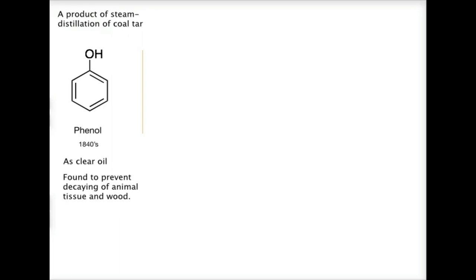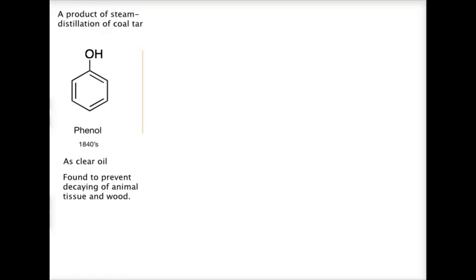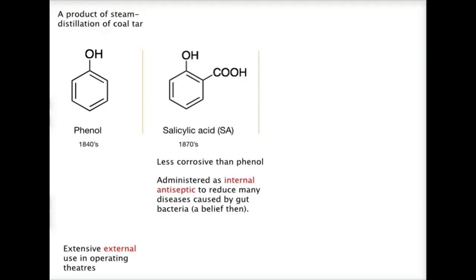So how was aspirin discovered? Around 1800, there was production of coal tar, and one of the byproducts of this distillation of coal tar is phenol. It came out as an oil and was used extensively in the surgical theatre to prevent wound sepsis. People then thought that if phenol could be used to prevent wound sepsis externally, could it also be used to prevent infection internally?